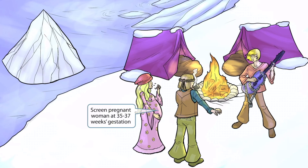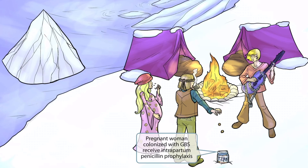Remember, pregnant women are screened at 35 to 37 weeks gestation. To help you remember the treatment, we'll show the hippie guy throwing some pennies into a tips jar. Penny sounds like penicillin, so this should help you remember that penicillin is the treatment. If a pregnant woman is found to be colonized with Strep agalactiae at 35 to 37 weeks, then she's treated prophylactically with penicillin during childbirth to decrease the risk of transmitting the organism to the child.